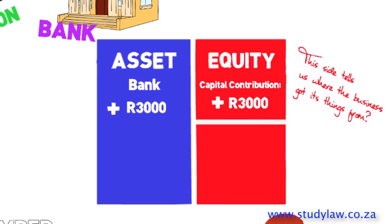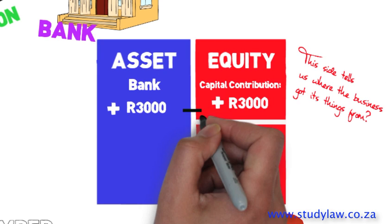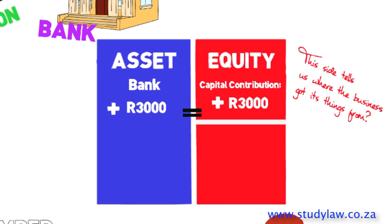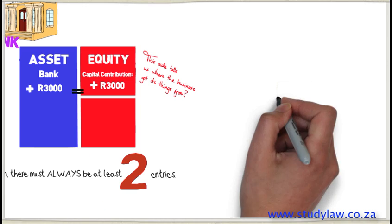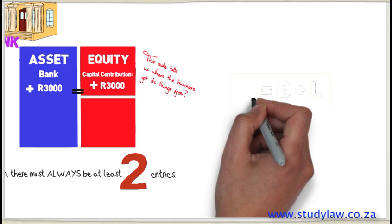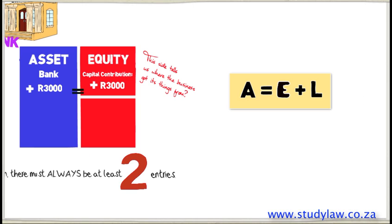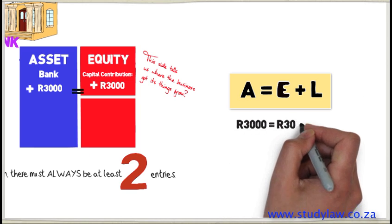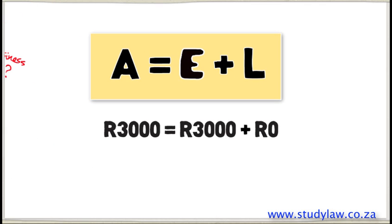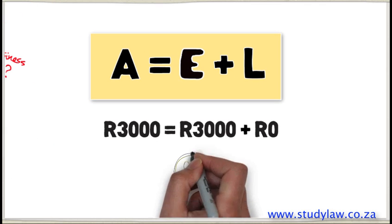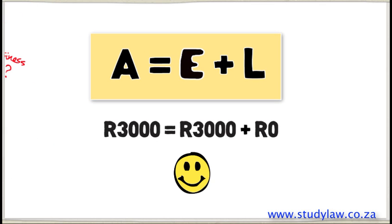Now we can see that both sides are equal to one another. Looking at the accounting equation — Assets equal Equity plus Liabilities — we can see that R3,000 is equal to R3,000 plus zero. Therefore, our account balances.